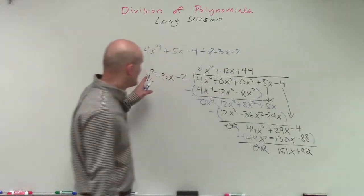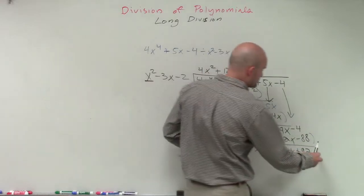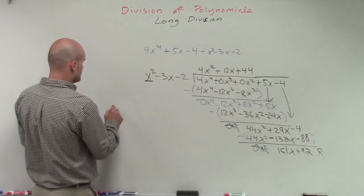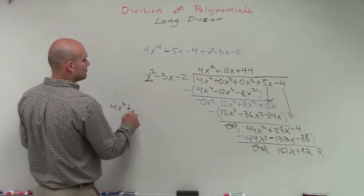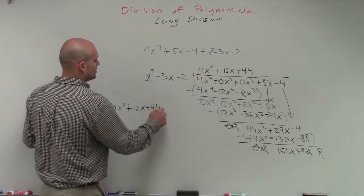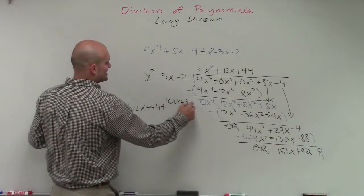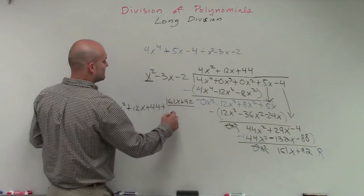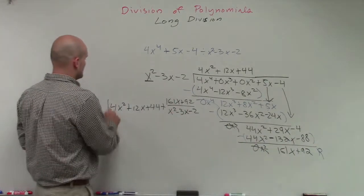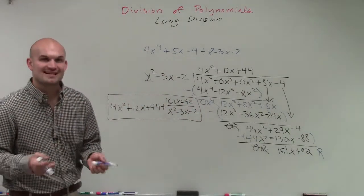Therefore, we see that x squared could not divide evenly into 161x, so therefore this is going to be our remainder. To write our equation, our quotient, we'll write 4x squared plus 12x plus 44 plus our remainder, which is 161x plus 84, all over our divisor, which is x squared minus 3x minus 2. So that will be our quotient for this division problem. Thanks.